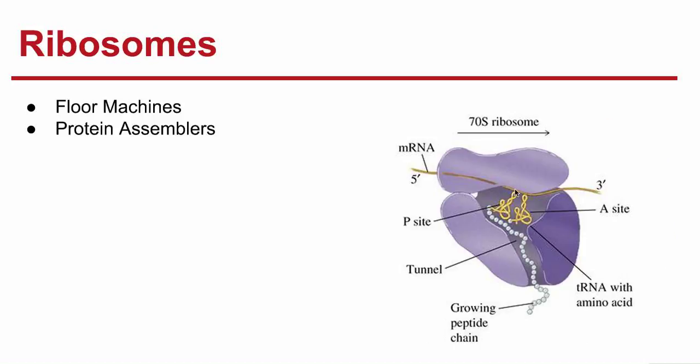Next we have the ribosomes — the floor machines of the factory. They assemble the proteins. Here we can see the messenger RNA, which is the coded instruction for assembling the proteins. Ribosomes are small particles of RNA and protein found throughout the cytoplasm. They produce proteins following coded instructions on the mRNA that come from the nucleus.